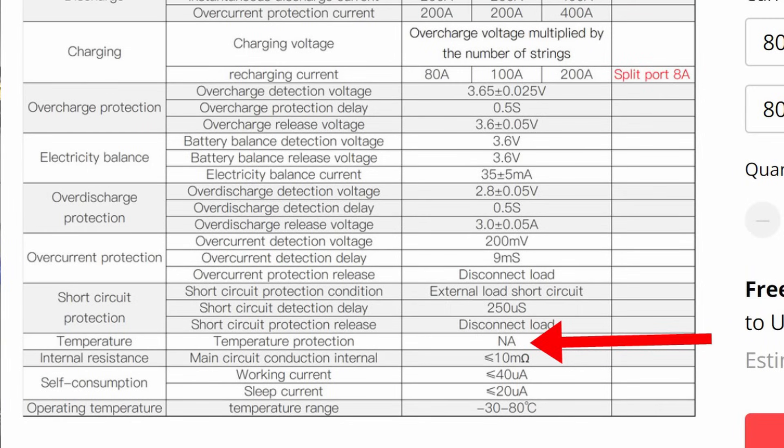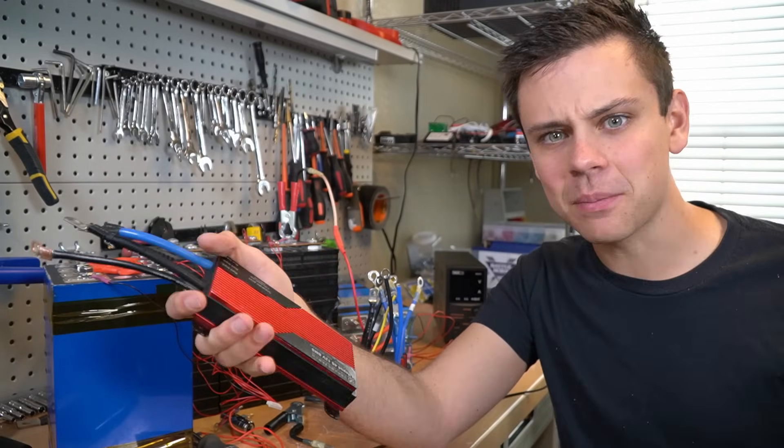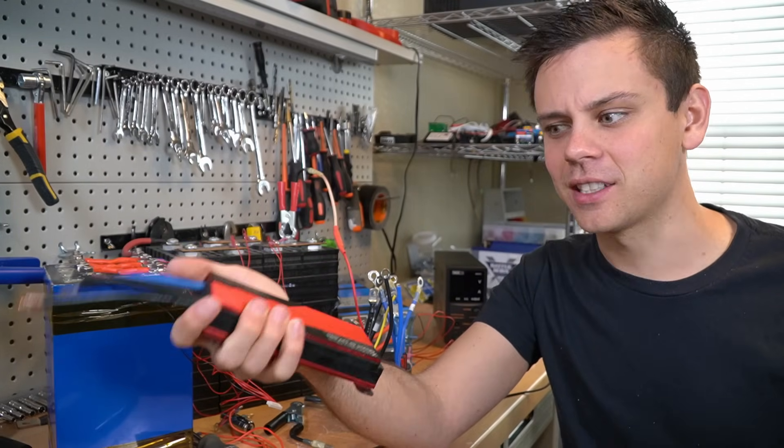But when you look at the ad on AliExpress, it says that it is not available under the temperature protection on the data sheet that they show. So I'm not sure what data sheet they're looking at, but they are telling me that the newer one actually has low temperature disconnect.